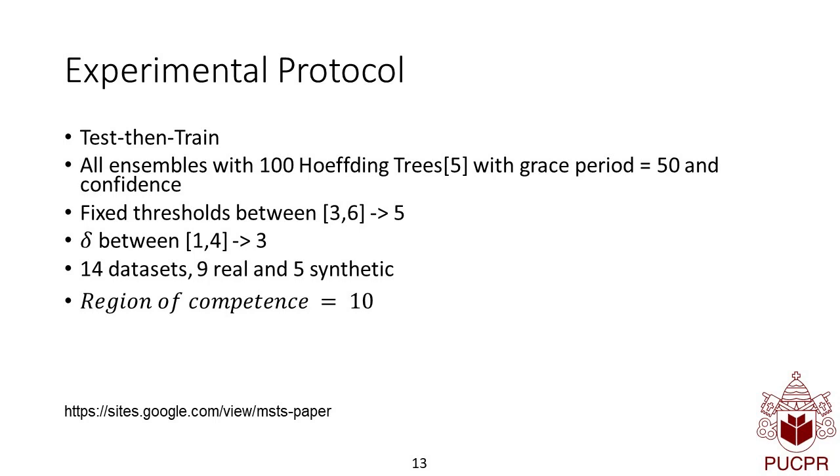And this means that the grace period being equal to 50 means that if a node has 50 observations, then a split attempt will occur based on the Hoeffding bound.